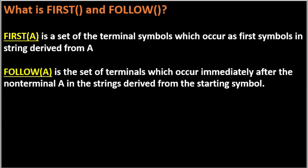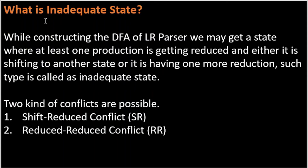The next question is: what is an inadequate state? While constructing the parsing table, if a single cell contains more than one entry — either a shift-reduce (S/R) conflict or a reduce-reduce (R/R) conflict — then that state is known as an inadequate state. There are two types of conflicts possible: shift-reduce conflict (SR conflict) and reduce-reduce conflict (RR conflict).